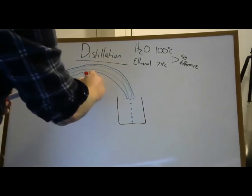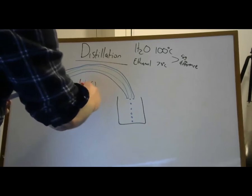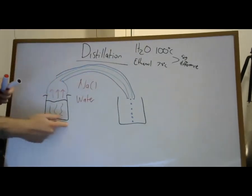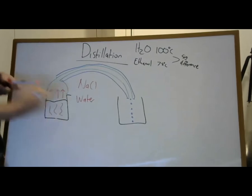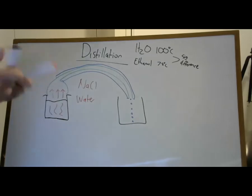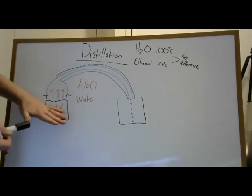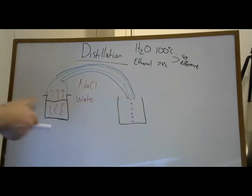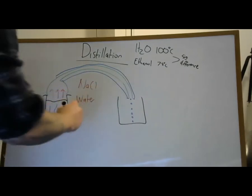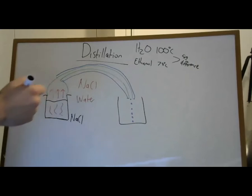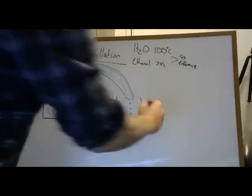For NaCl and water, we put our salty water in, heat it to 100 degrees. Sodium chloride has a melting point of hundreds of degrees, so all the water boils away and we catch it on the other side. Over here we'd end up with crystals of sodium chloride, or salt, and on the other side we would have pure water.